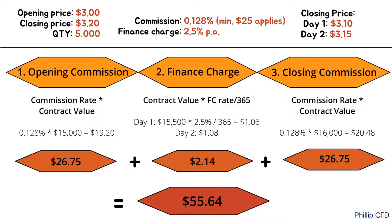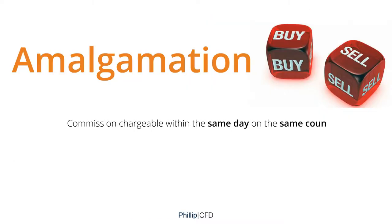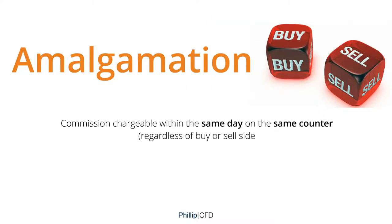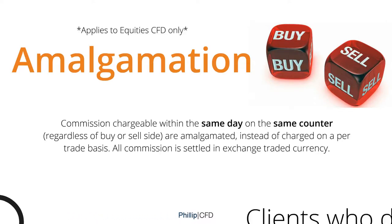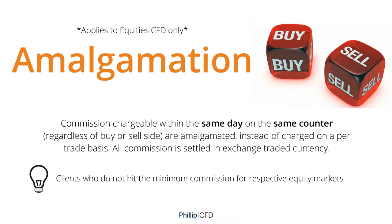One of the biggest advantages of trading with Philips CFD is that we offer amalgamation of contracts across buy and sell for equity CFD. Amalgamation is a practice of combining your buy and sell trades that are traded within the day, so that we only charge your commission once. This is applicable to clients who do not hit the minimum commission from respective equity markets.